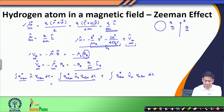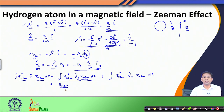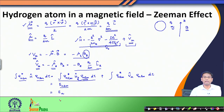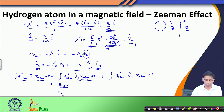Looking at the first term of the Hamiltonian: since psi_nlm is an eigenfunction of H0, acting on it gives the energy E_nlm. As a reminder, hydrogen atom energy does not depend on l and m — it has only n dependence, because for the nth level there are n² different eigenfunctions. The energy level is n²-fold degenerate and depends only on the principal quantum number n. So we write this simply as E_n.